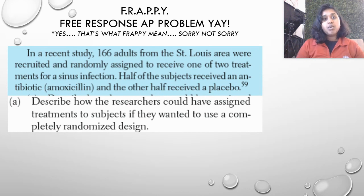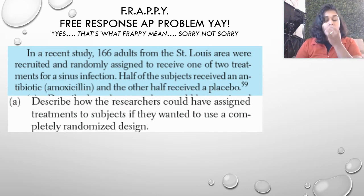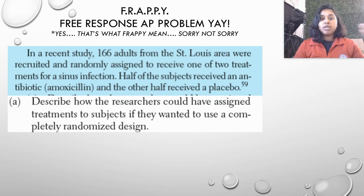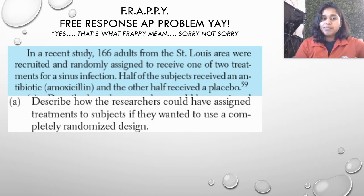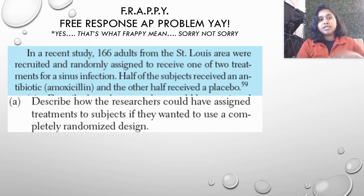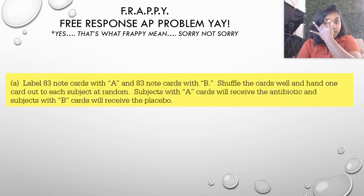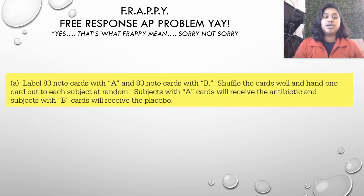Describe how the researchers could have assigned treatments to subjects if they wanted to use a completely randomized design. It's kind of simplistic, so maybe you can walk yourself through it. You have to remember the parts of a completely randomized design. Let's go ahead and look at our answer.